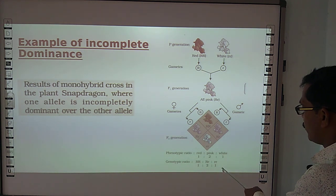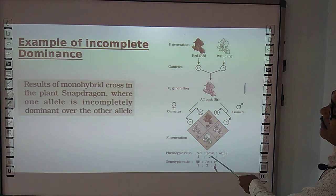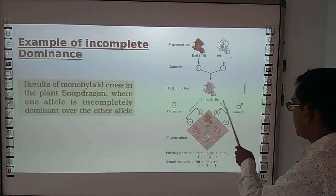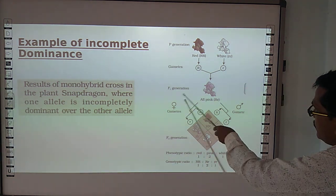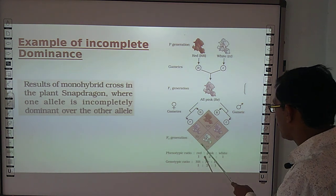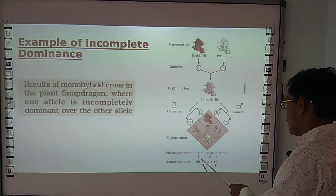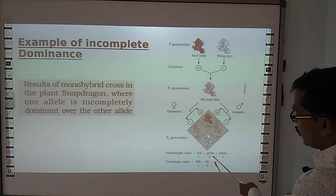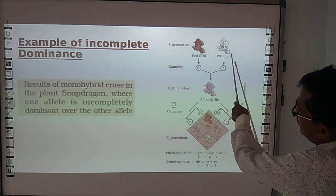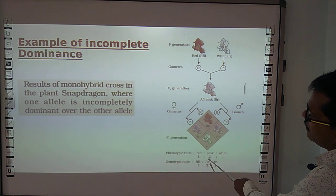These are exceptions to Mendelian Law. When crossing F1 plants among themselves in F2, the ratio is 1:2:1 — one red, two pink, and one white. The white characters reappear, but intermediate (pink) traits are also shown, confirming incomplete dominance.